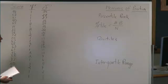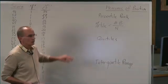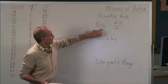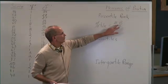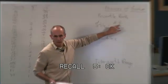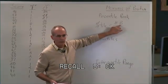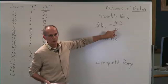The formula for computing a percentile rank is to take the number of scores below the number you're interested in and divide that by the total number of scores.